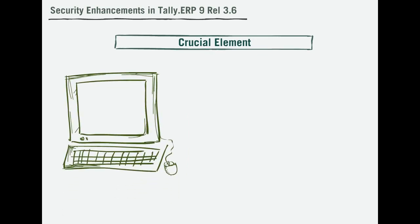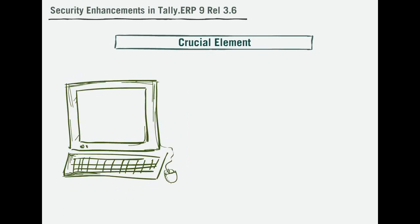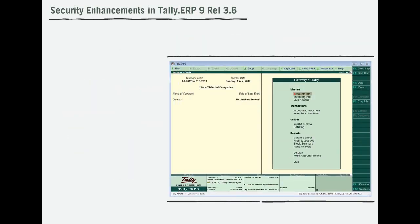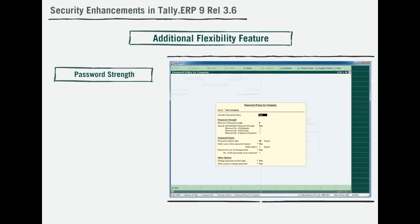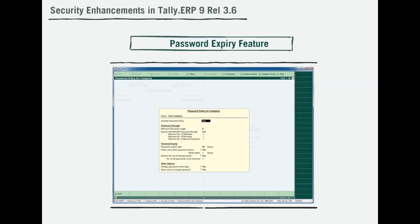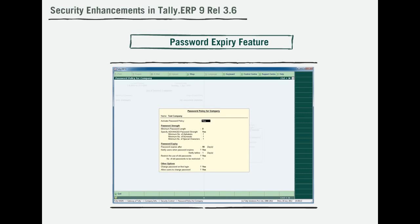There is one crucial element that can protect your system from being compromised, and that is nothing but the password. Release 3.6 offers additional flexibility features such as the password strength feature, thereby ensuring that unauthorized intruders will be unable to access the system.